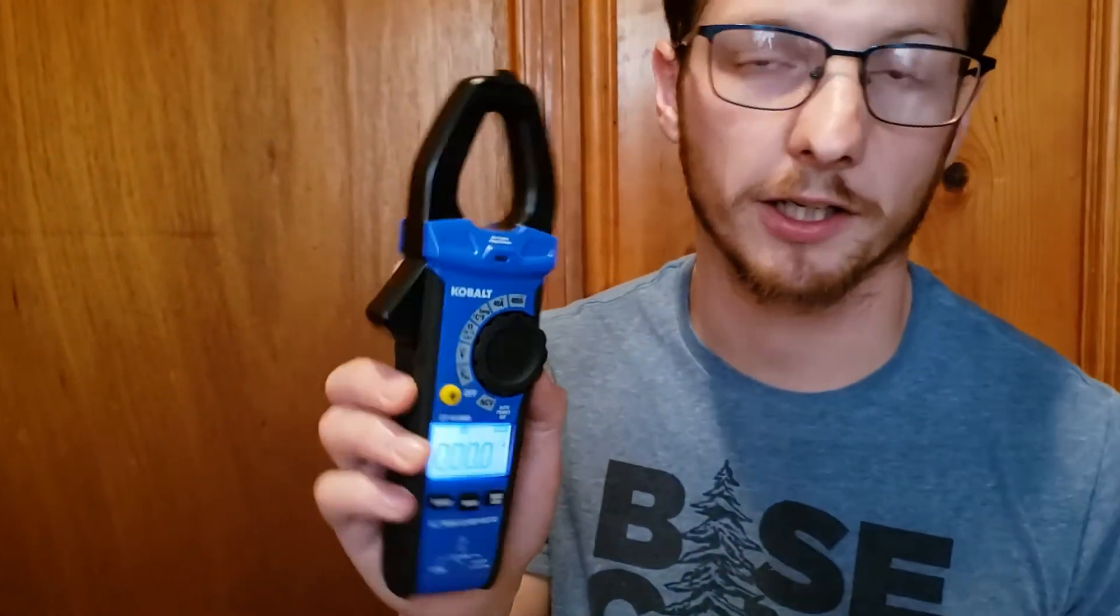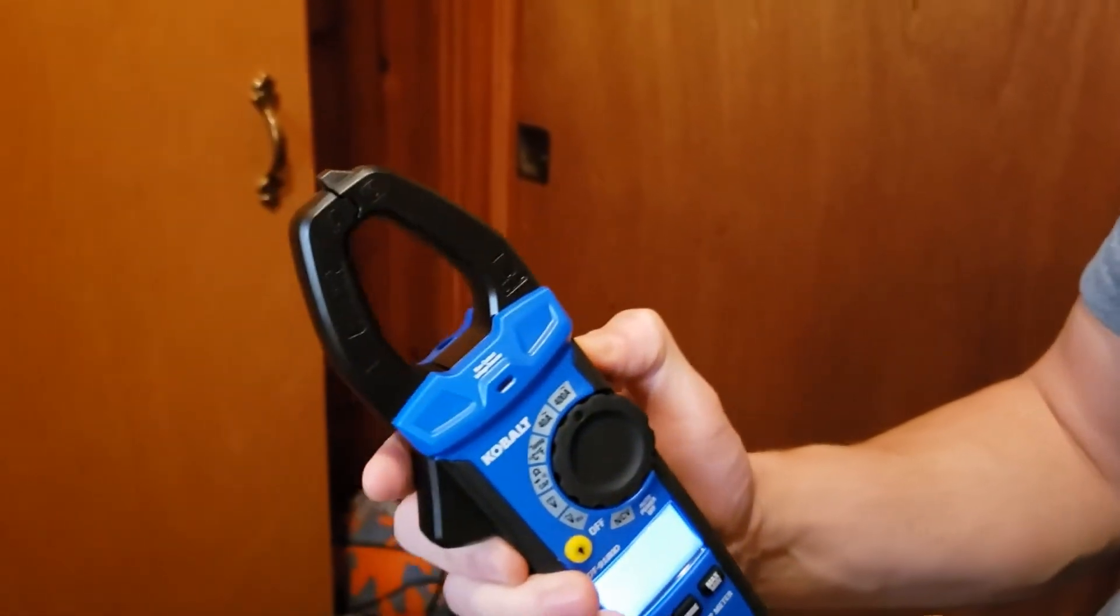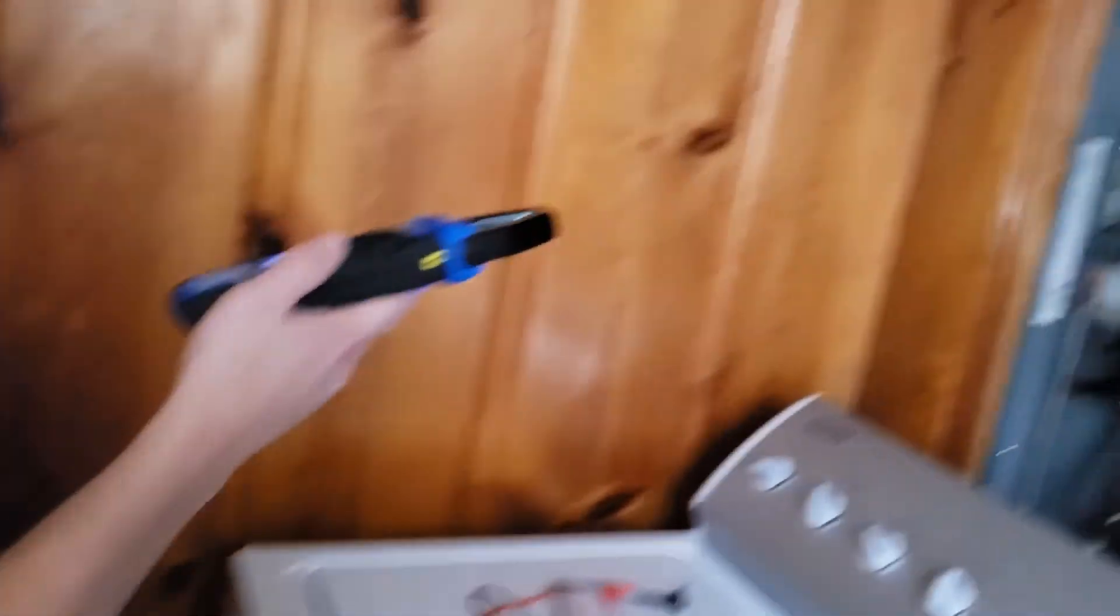The last really cool thing that this cobalt clamp-on multimeter can do is if you hold this light right here, or this button right here, you can get a nice light so you can see stuff.